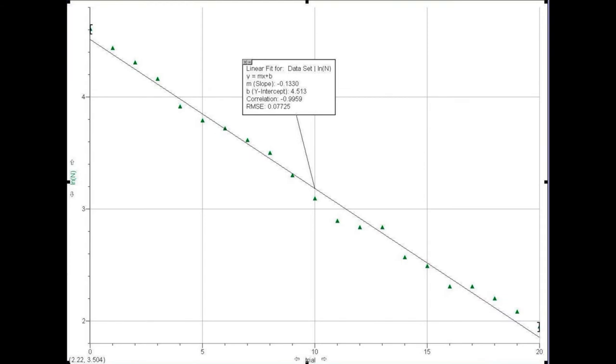Finally, plot the natural log of the number of dice versus trial number and get the decay constant from the slope of the linear fit.